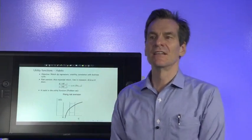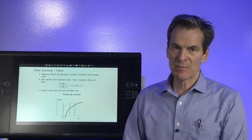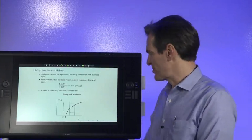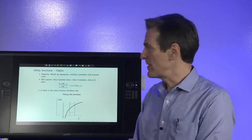First, let's talk about habits. This is a change in the utility function that helps us understand the link between asset prices and macroeconomic fluctuations. This is the paper that I wrote with John Campbell, and we'll go through that here.